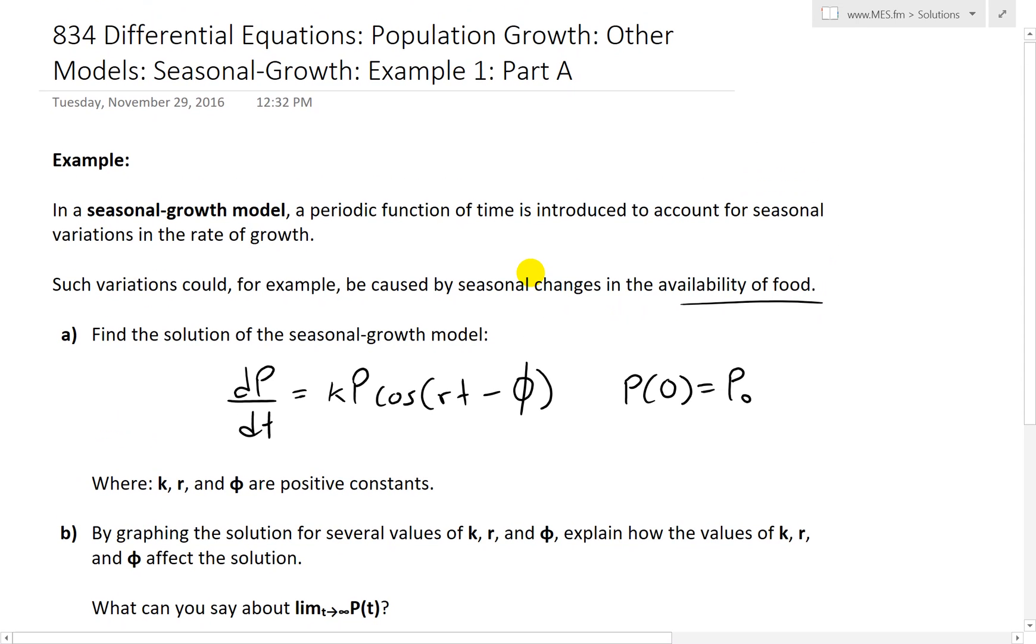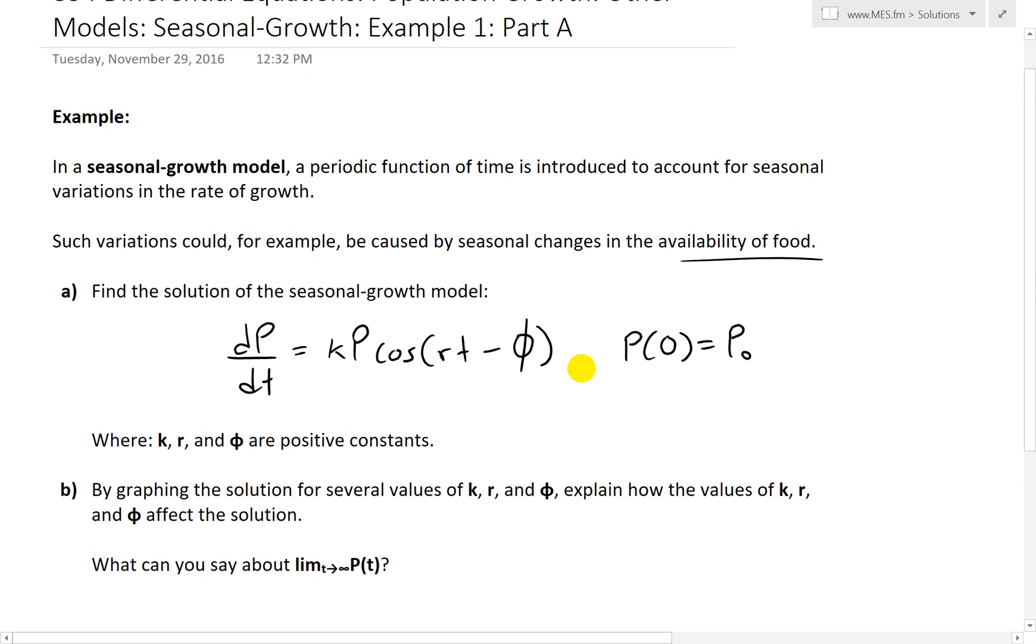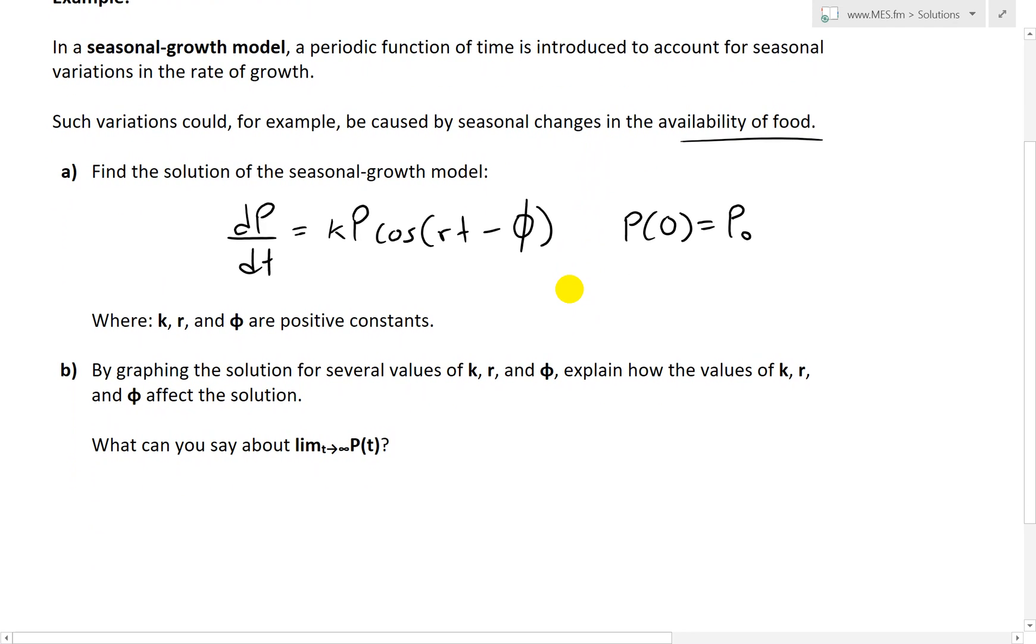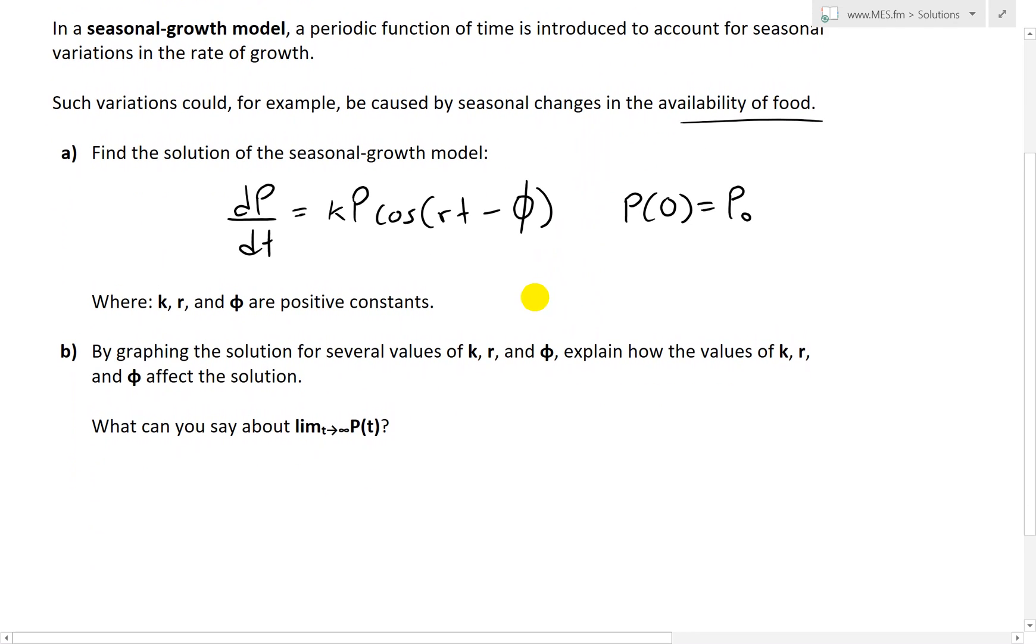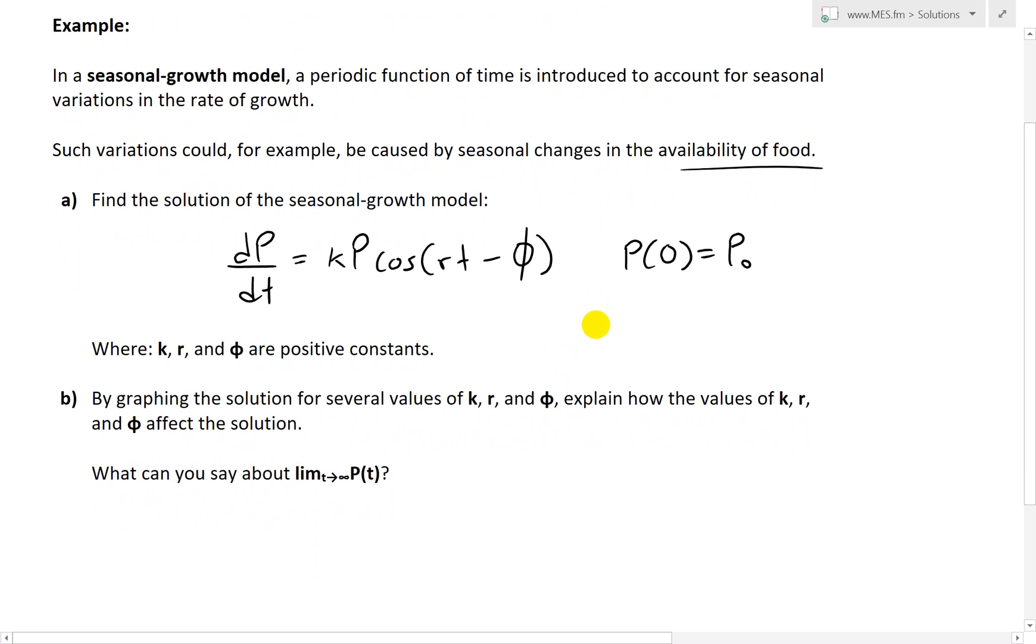So if you have more food, chances are the population grows faster for bacteria or for humans, etc. And these other seasonal changes could be, again, by the season of the year. For example, fall, winter, summer, it's going to have different food availability or different things that might affect the growth rate as well.